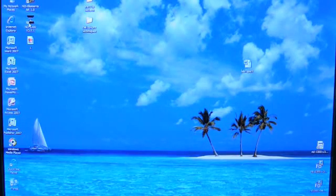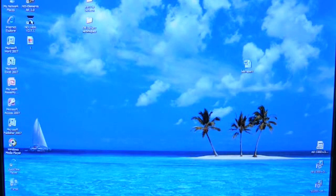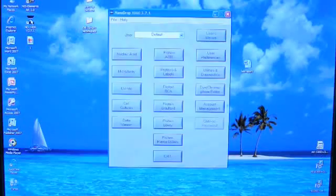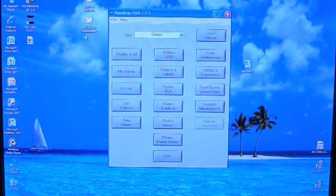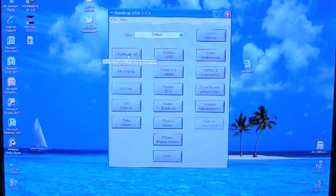Before beginning, boot up the Nanodrop software. First, find the icon labeled ND1000 and double click. Once the program starts, the software interface will be displayed. Since we are sampling DNA during this tutorial, find and click the button on the upper left of the menu labeled Nucleic Acids.